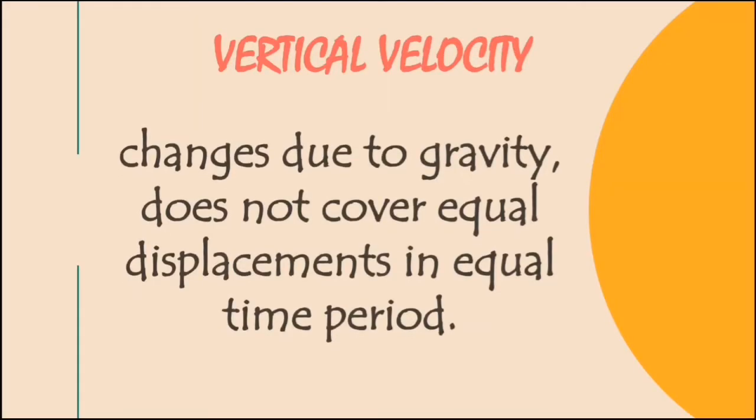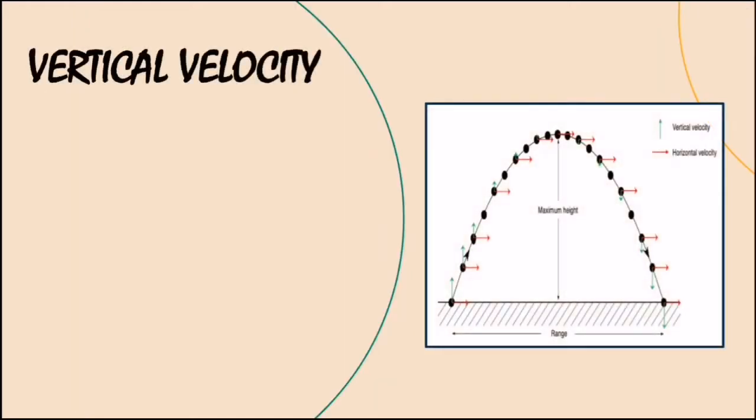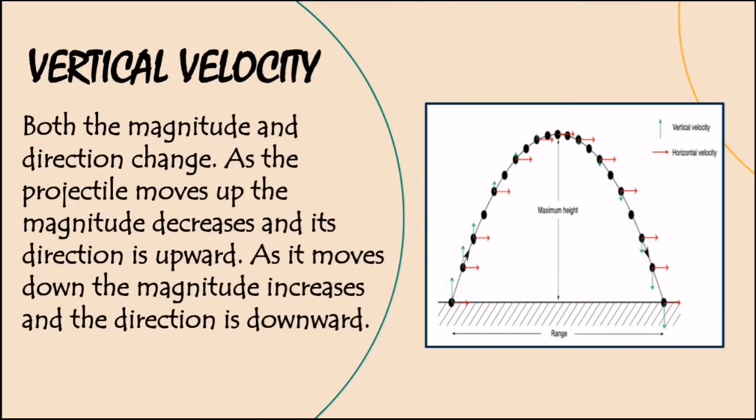While vertical velocity changes due to gravity and does not cover equal displacement in equal time period, it's the exact opposite of the horizontal velocity. Both the magnitude and direction change. As the projectile moves up, the magnitude decreases and its direction is upward. As it moves down, the magnitude increases and the direction is downward.